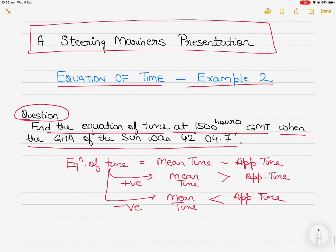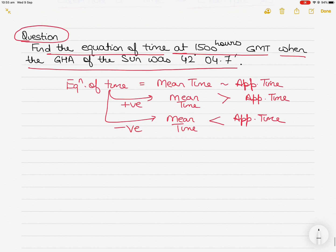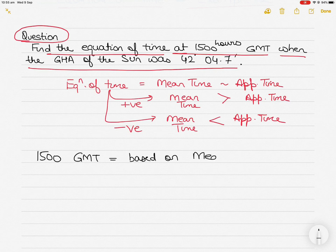The true sun takes varying time, which is why it cannot be used as a means of timekeeping — that's why we use the concept of the mean sun, which gives us exactly 24 hours. So when we say 1500 hours GMT, it means Greenwich Mean Time, which is based on the mean sun. We have to find the time based on the true sun's movement, and the difference between these two times will give us the equation of time.